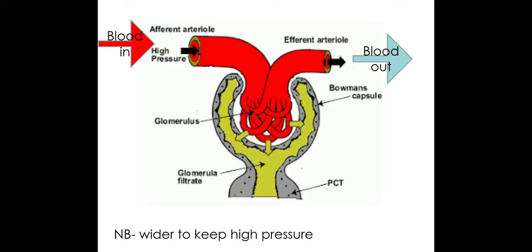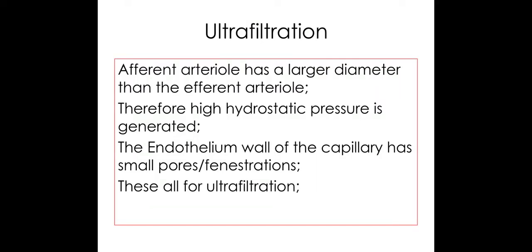Due to this difference in lumen size, it creates a higher pressure inside the glomerulus, forcing out certain substances. From the mark scheme: the afferent arteriole has a larger diameter than the efferent arteriole, therefore we have a high hydrostatic pressure within the glomerulus. The endothelium wall of the capillary has small holes called fenestrations, and these are used for ultrafiltration.